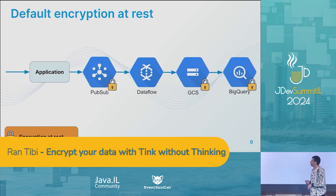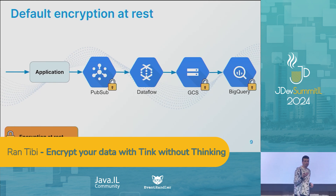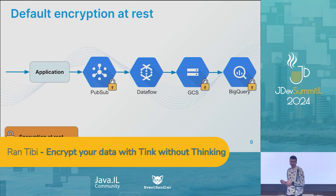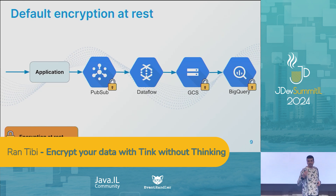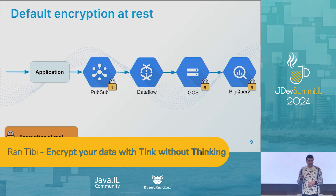So we gathered all of those requests and started investigating. First, we checked if there is some out-of-the-box solution as part of the infrastructure, and found out that PubSub, GCS, and BigQuery are all encrypted at rest by default. This means that when we don't use the data and it just goes to disk, it's encrypted. But when we read the data, it's seamlessly decrypted and we get the data as plain text. So it seemed like we met the encryption requirement without doing anything, right? But we asked ourselves — is that enough?